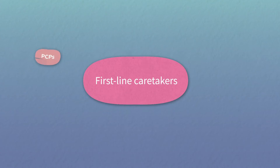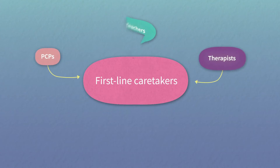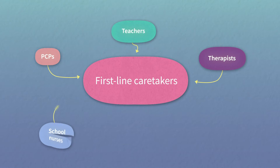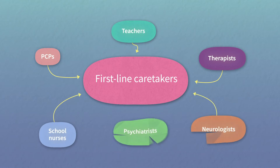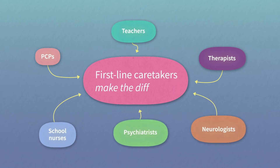First-line caretakers, such as the PCP, therapist, teacher, and school nurse, along with specialists like neurologists and psychiatrists, can make the difference between prompt, accurate diagnosis and delayed identification and care.